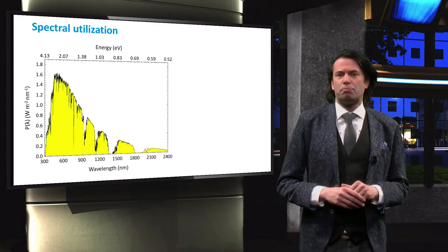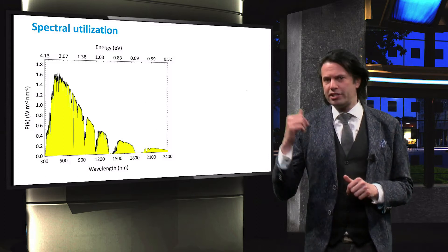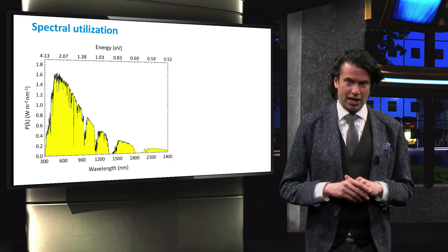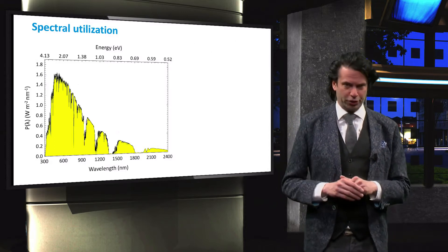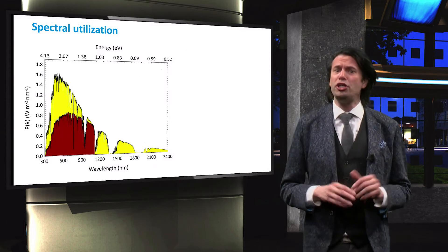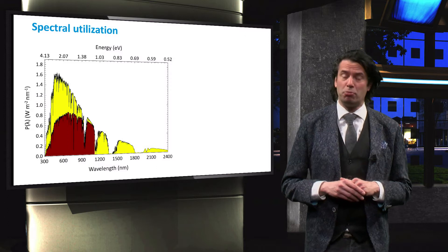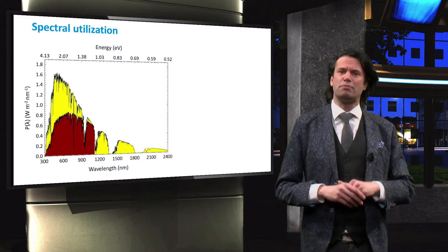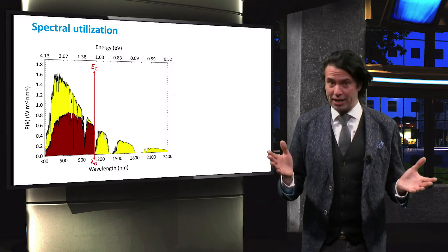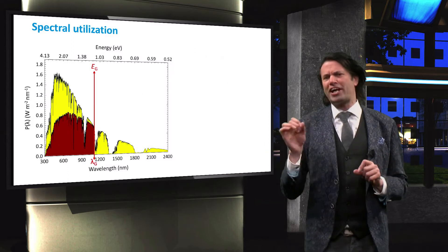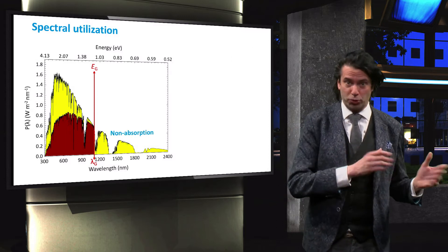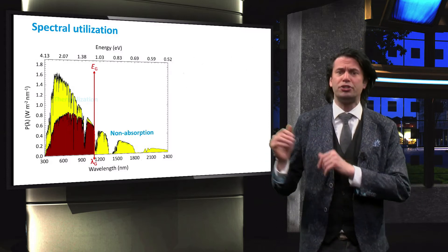We will start with the spectral utilization. Shown in this figure is the AM1.5 spectral power density as observed at the surface of the Earth. As you may recall, any single junction solar cell can only utilize a fraction of the available energy, as indicated by the brown area. Depending on the bandgap energy of the absorber, a fraction of the energy will be lost, either due to non-absorption of the photons or due to thermalization.